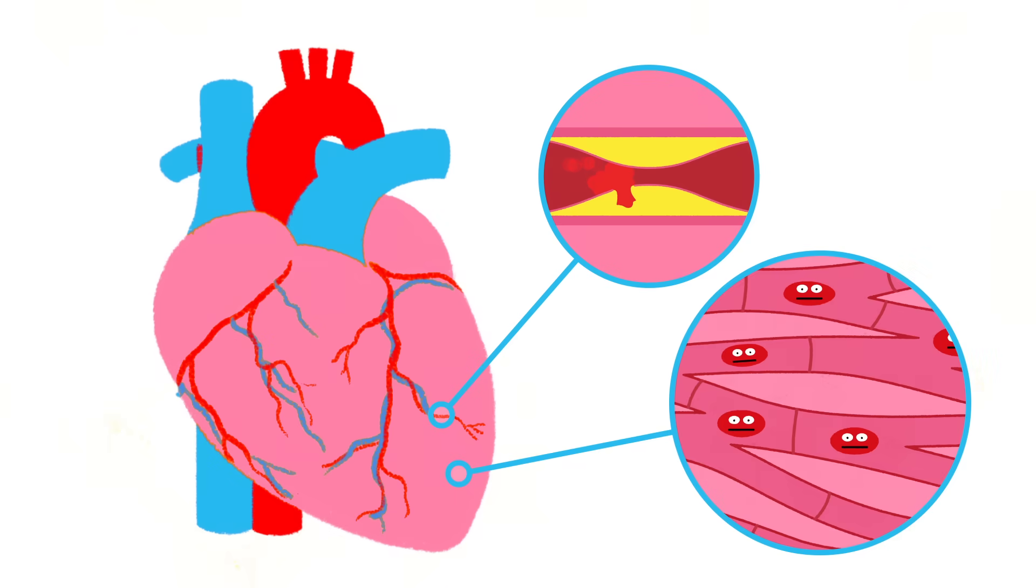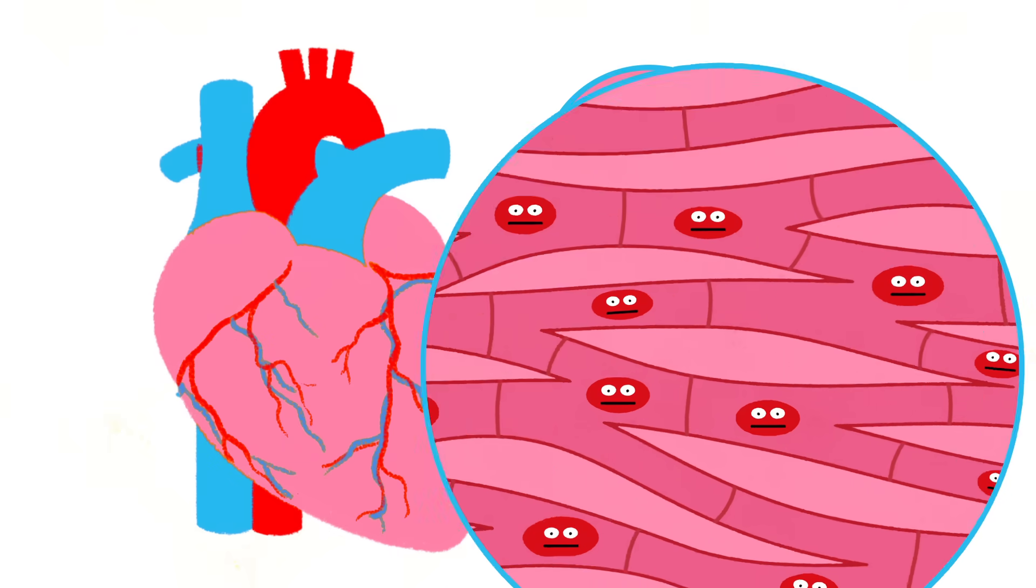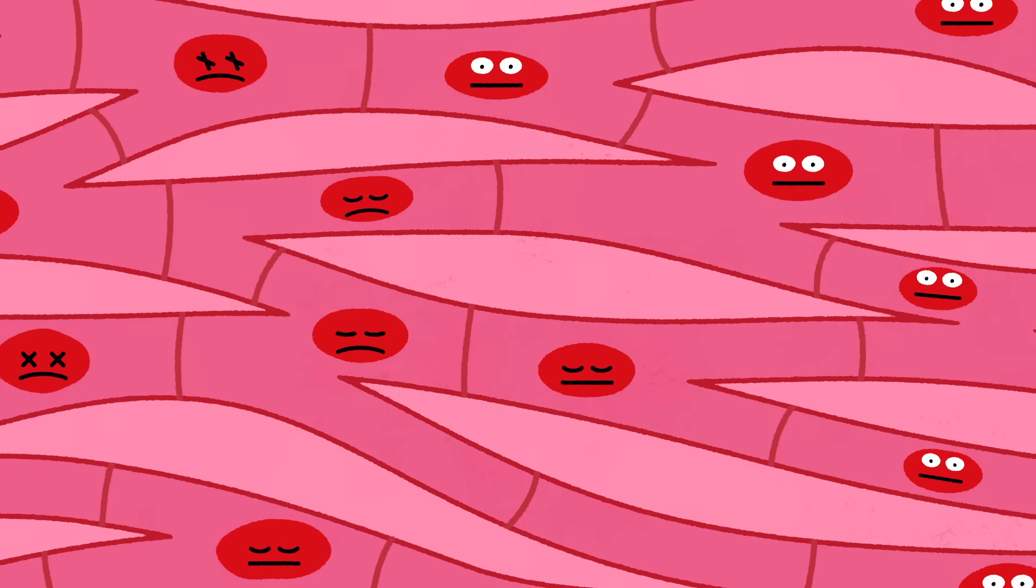If one of the plaques ruptures or cracks, a blood clot will form around it in minutes, and a partially closed artery can become completely blocked. Blood flow is cut off to the cardiac muscle, and the oxygen-starved cells start to die within several minutes.